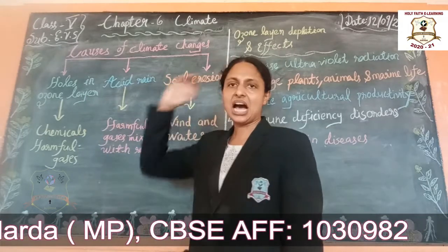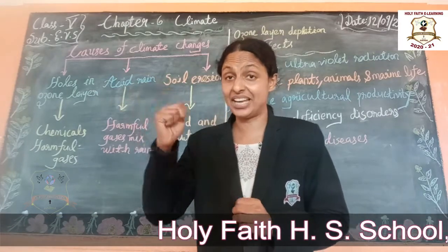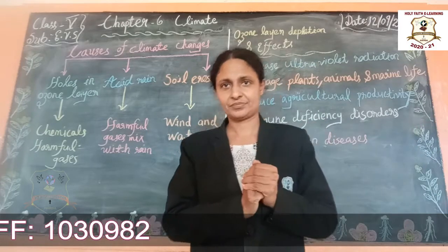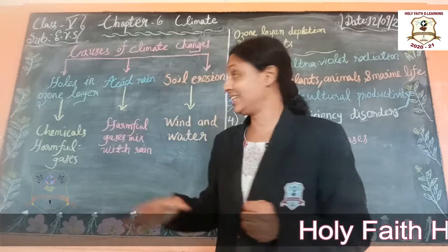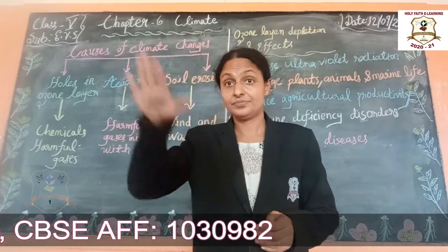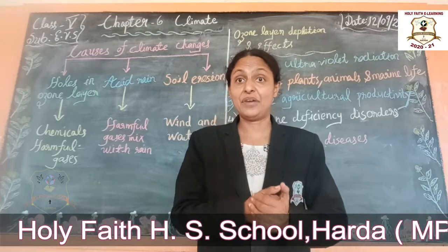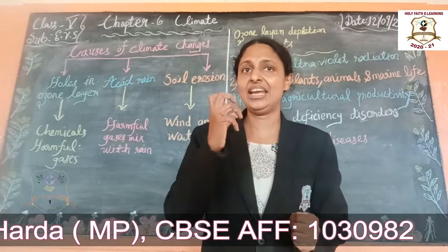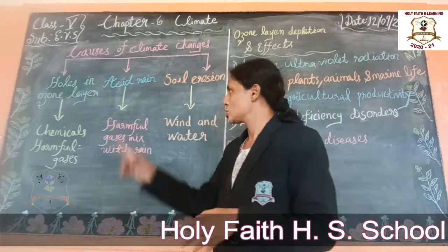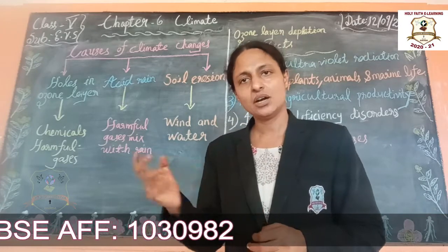Now let us learn about acid rain. Harmful gases from vehicles and industries mix with the atmosphere — the layer of air. When it rains, these acid molecules and chemical particles also come down with the rain. Acid rain is very harmful to plants and humans — harmful gases from factories and vehicles mix with rain and fall as acid rain.